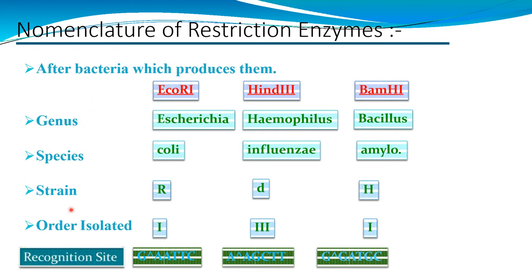Nomenclature of restriction enzymes depends on genus, species, strain, and order of isolation. For example, EcoRI was isolated from Escherichia coli with strain R and was the first enzyme isolated. The first letter of the genus — E — is written in capital, while the first two letters of the species are written in lowercase.